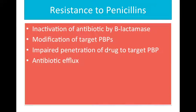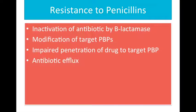Third is the impaired penetration of drug to target PBP. Resistance due to impaired penetration occurs only in gram-negative species because of the outer membrane of their cell wall, which is absent in gram-positive bacteria. Beta-lactam antibiotics cross the outer membrane via outer membrane protein channels called porins. Absence of the proper channel or down-regulation of its production can greatly impair drug entry. Fourth is antibiotic efflux: gram-negative organisms may produce an efflux pump that efficiently transports some beta-lactam antibiotics from the periplasm back across the outer membrane.